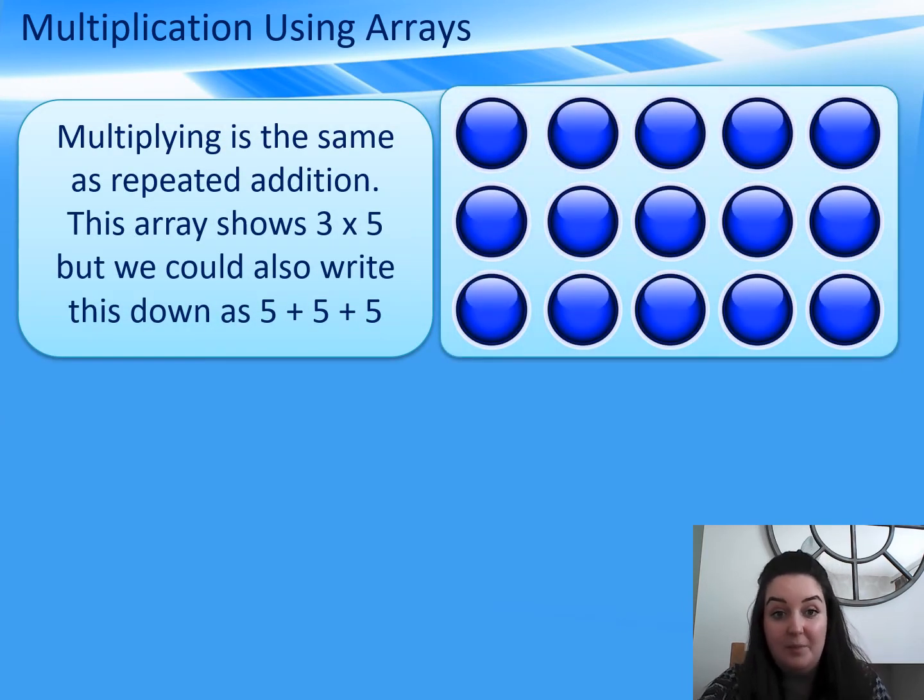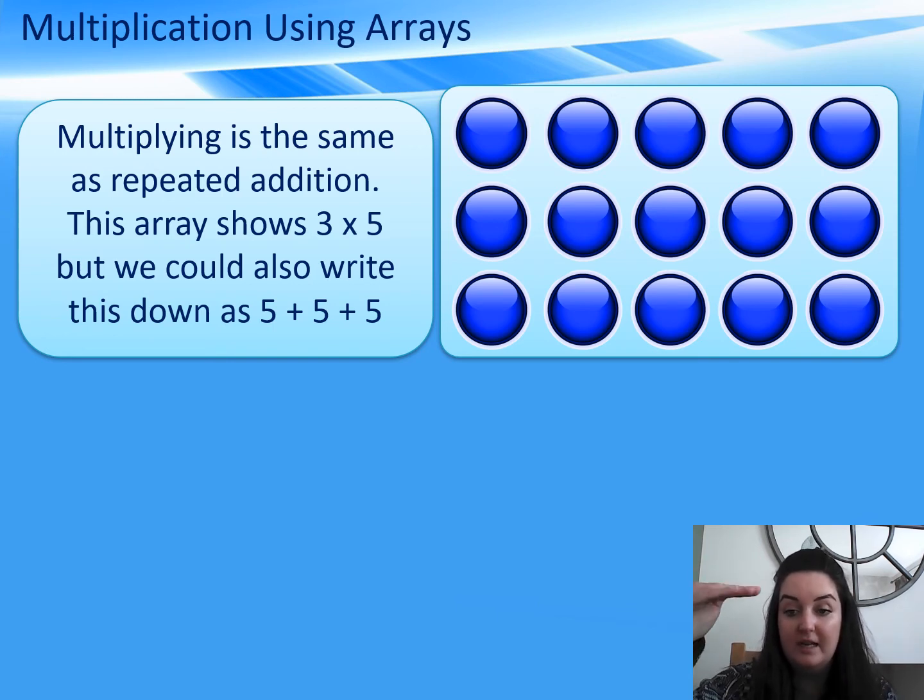Remember, we were practising repeated addition, so multiplying, so times tables, is exactly the same as repeated addition. This array, we would write 3 times 5, because there's 3 equal groups going down, and there are 5 in each group. We could write it, as we've been practising, 5 add 5 add 5.